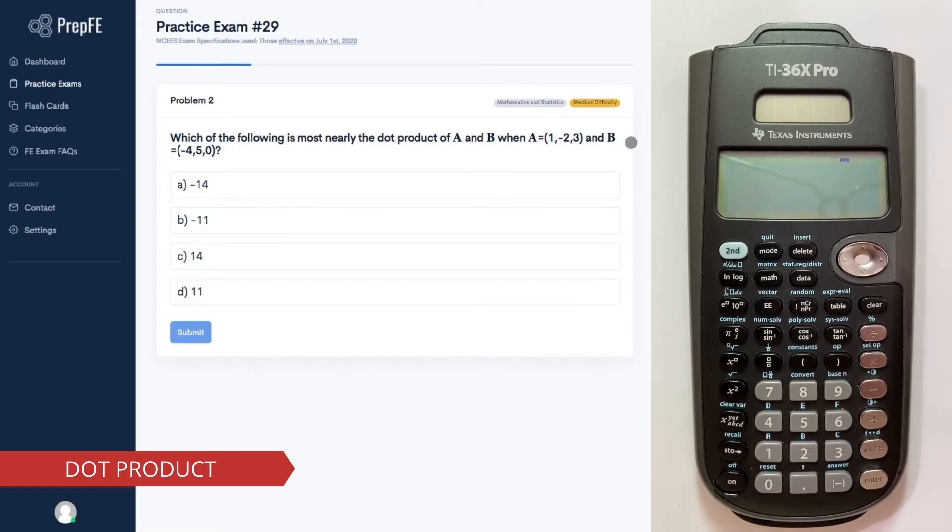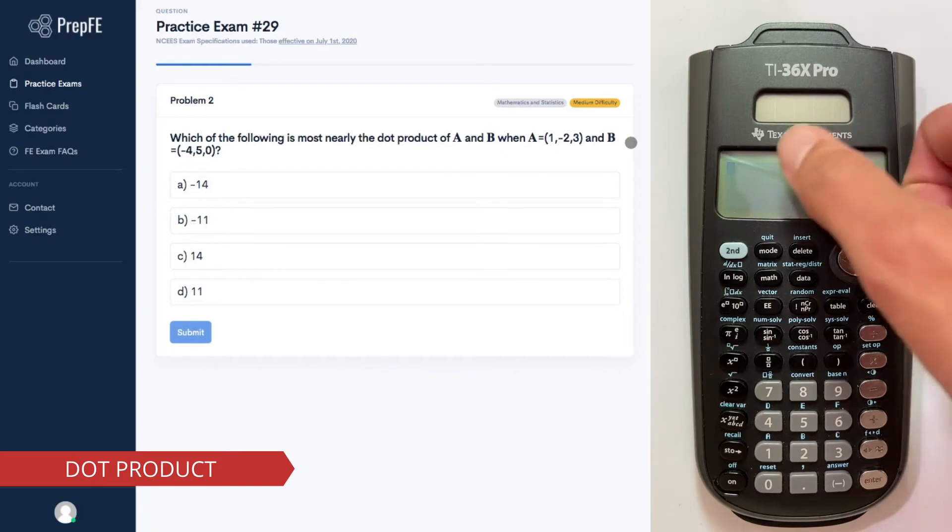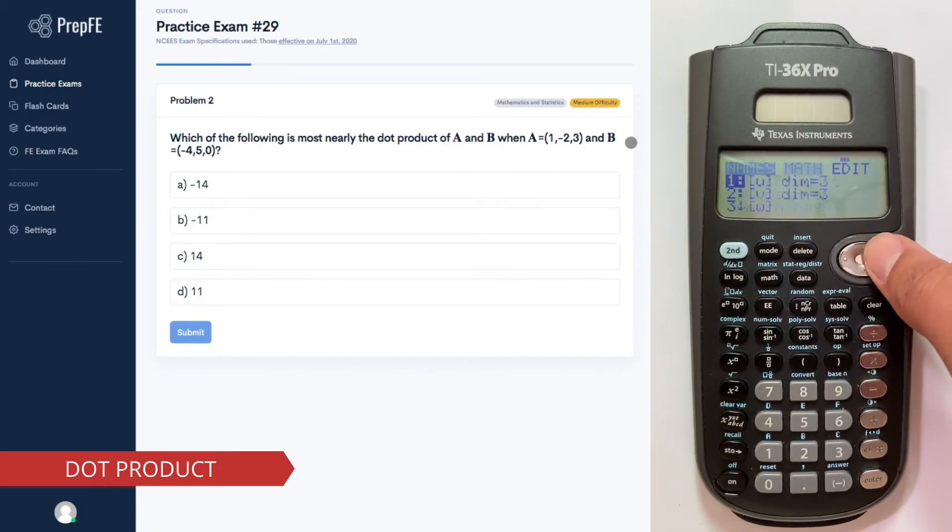We can use the calculator's dot product function by going to Second, Vector, then go to Math, select dot product.